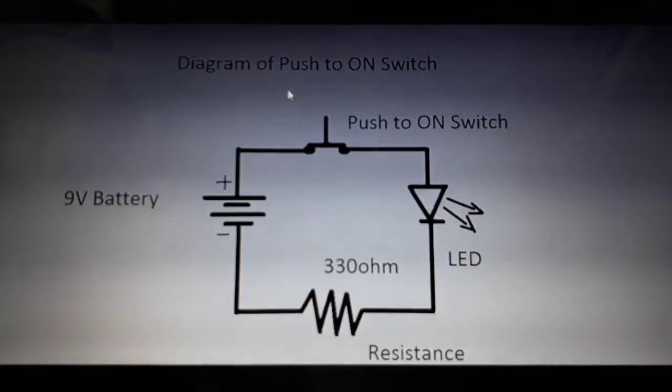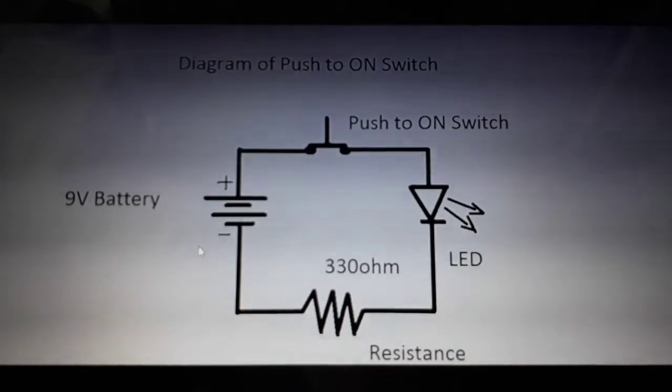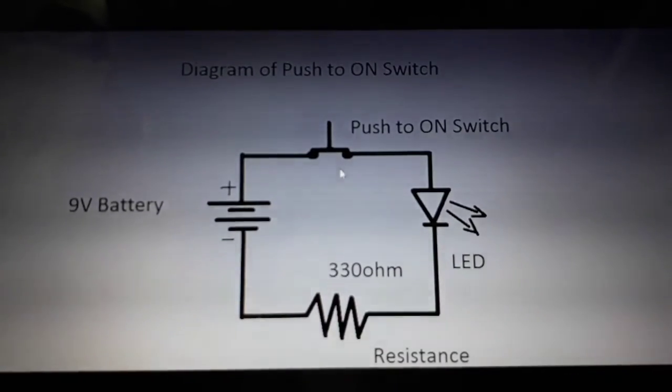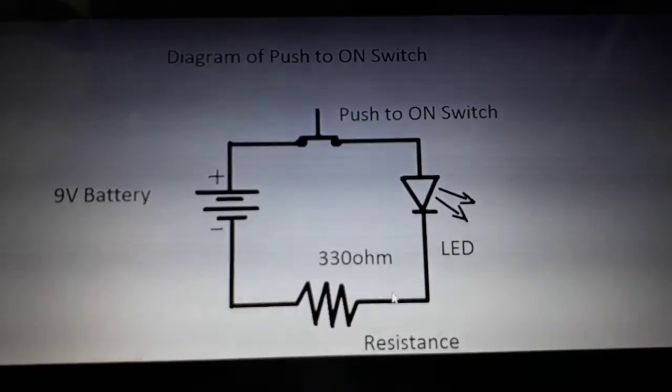This is the diagram of the push-to-on switch circuit. Here is the 9V battery with positive and negative terminals, the push-to-on switch, the LED, and the 330 ohm resistor.